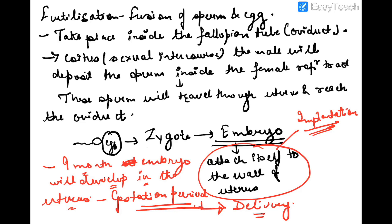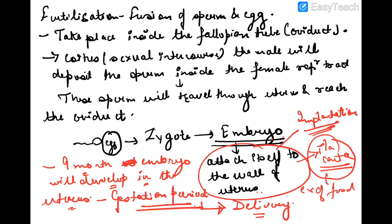When the embryo attaches to the wall of the uterus, there is a structure between them known as the placenta. The placenta joins the embryo and the uterus, and helps in exchange of food and oxygen between the embryo and the mother, as well as removal of carbon dioxide from the embryo to the mother.